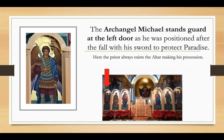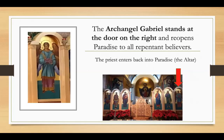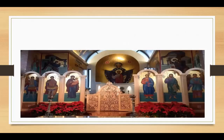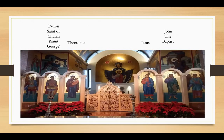The Archangel Michael stands guard at the left door, as he was positioned after the fall with his sword to protect paradise — this is where the priest always exits the altar, making his procession. The Archangel Gabriel stands at the door on the right and reopens paradise to all repentant believers — this is where the priest enters back into the altar. To recap: Jesus to the right of the royal doors, the Theotokos to the left, John the Baptist to the right of Jesus, the patron saint to the left of the Theotokos, Archangel Gabriel at the entry door, and Archangel Michael at the exit door.